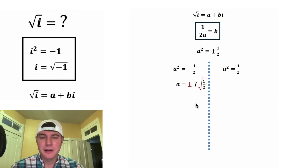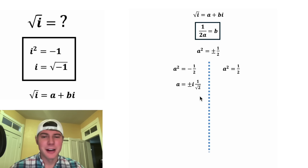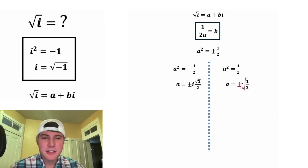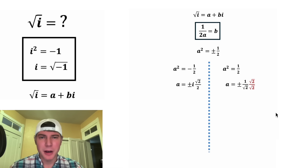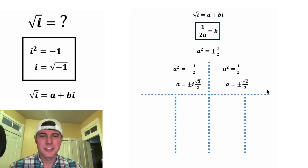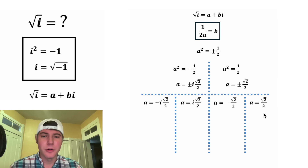For the fraction, the square root distributes: square root of 1 is 1 and square root of 2 is root 2. Since we're not supposed to have a radical in the denominator, we multiply top and bottom by root 2, giving root 2 over 2. So a equals plus or minus i times root 2 over 2. For the scenario where a squared equals positive 1 half, square rooting both sides and rationalizing gives a equals plus or minus root 2 over 2. So we have four possible values for a.